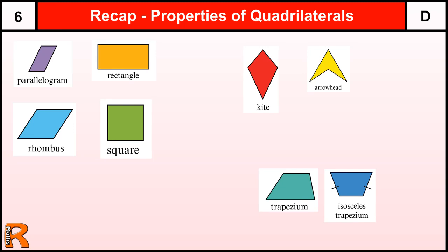Properties of Quadrilaterals — Grade D, GCSE Level 6 National Curriculum recap. What I'm going to go through here is the properties of quadrilaterals, which are four-sided shapes — anything with four sides. I have some pictures of quadrilaterals here; these are the ones with special names. I'm going to start with the parallelograms.